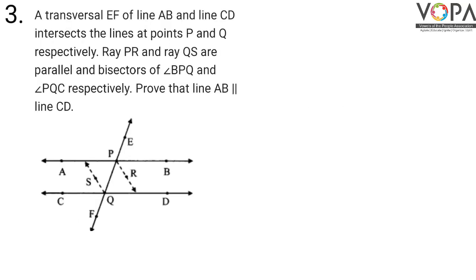A transversal EF of line AB and line CD intersects the lines at points P and Q respectively. Ray PR and ray QS are parallel and bisectors of angle BPQ and angle PQC respectively. Prove that line AB is parallel to line CD.